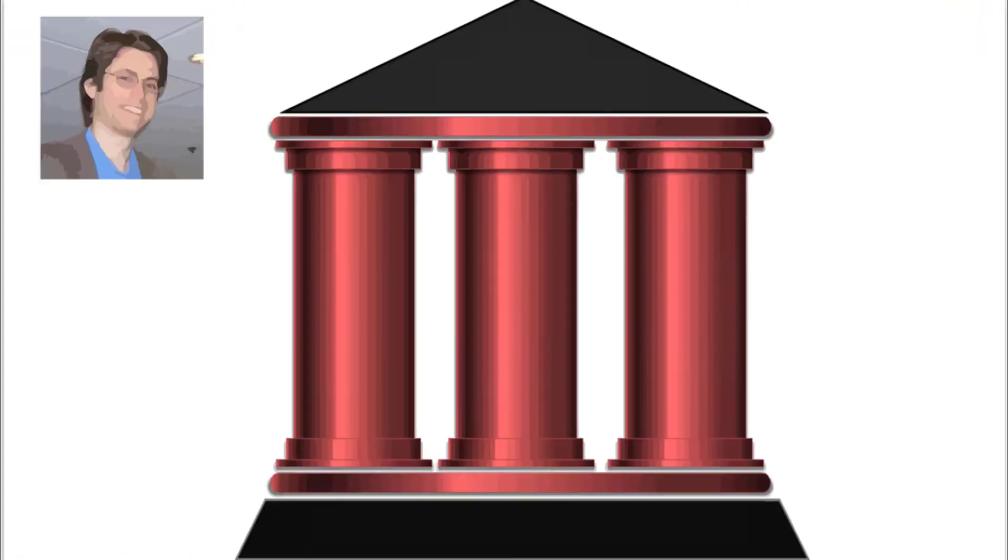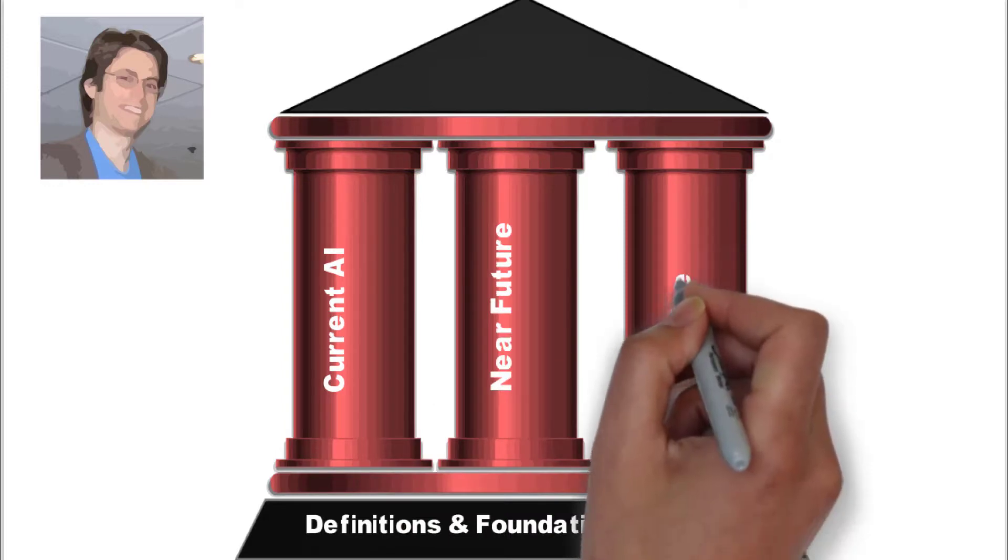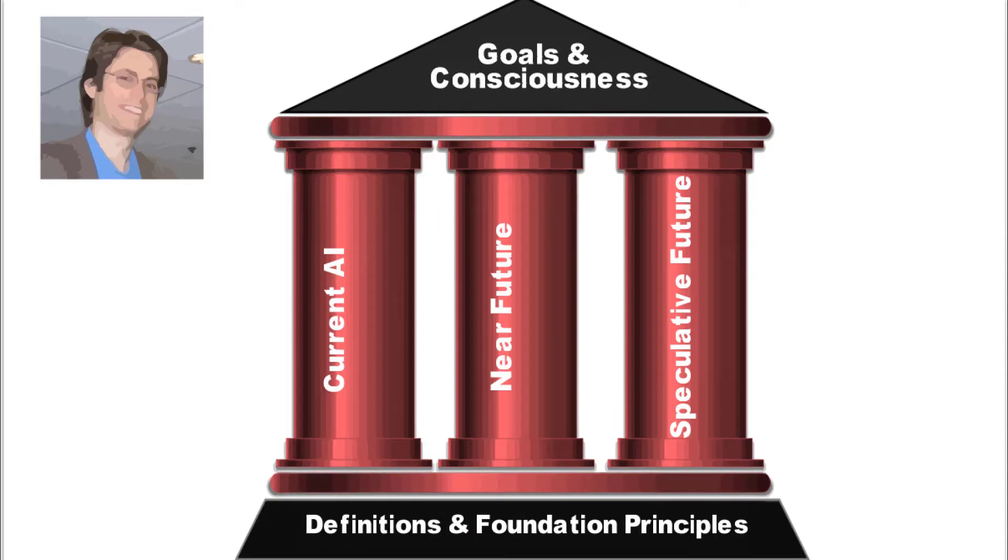We're going to do a review and critique of Max Tegmark's Life 3.0. It basically has a structure where he starts with definition and foundation principles. He talks about current AI, and then he talks about the near future. He then goes into the speculative future and finishes with the idea of goals and consciousness.